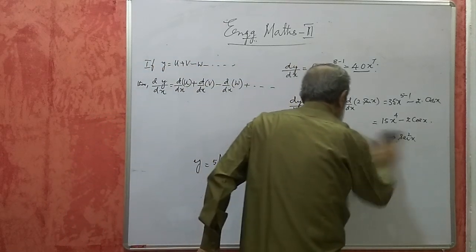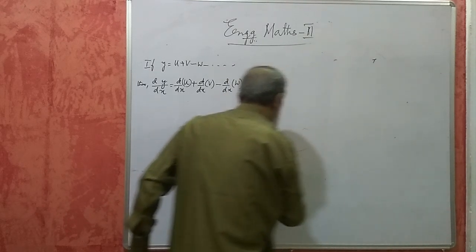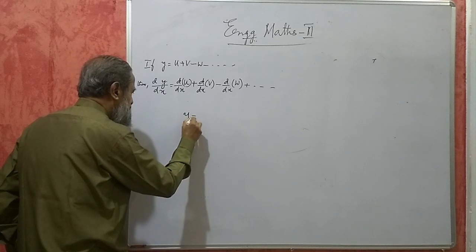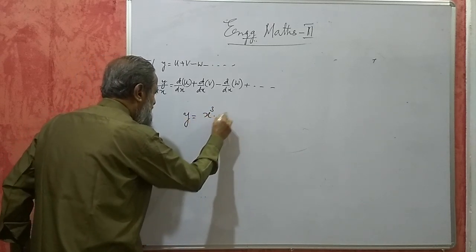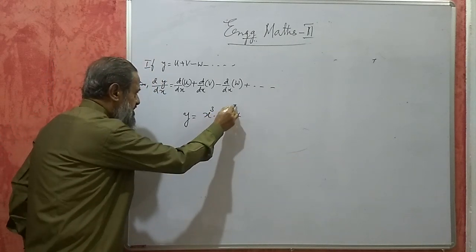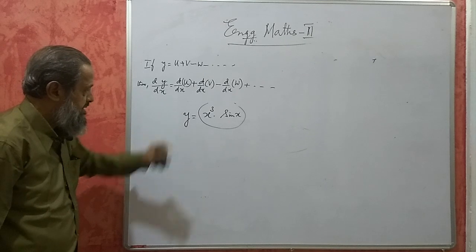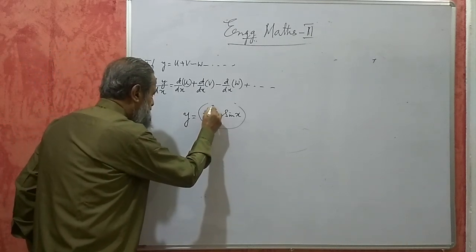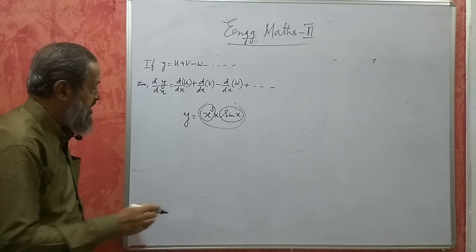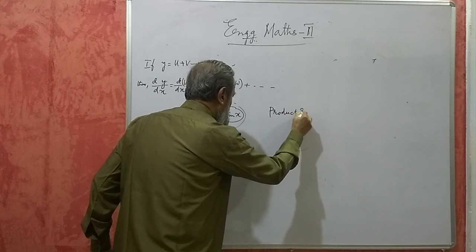Next, suppose I have y is equal to x cube into sin x. There is no plus or minus here. This is now one single monomial term. In this, there are two functions — it is the product of two functions. To differentiate this, we must use a rule called the product rule.